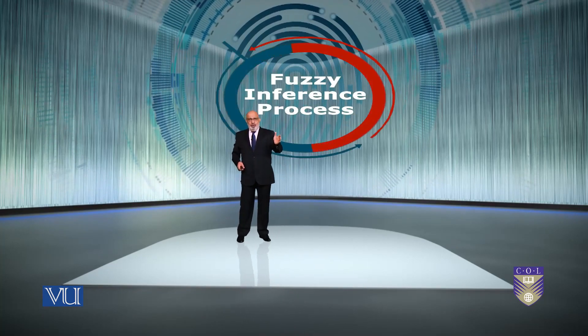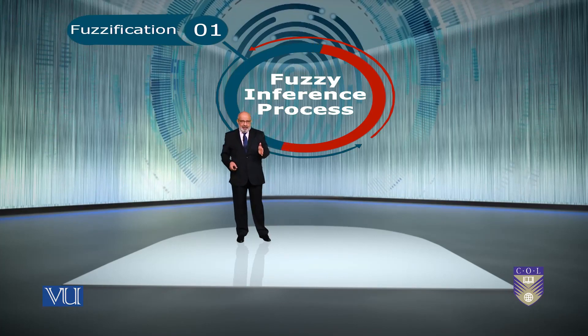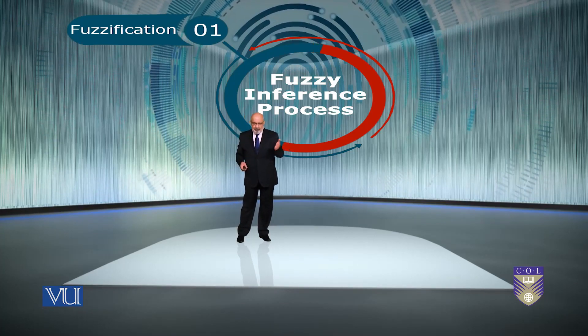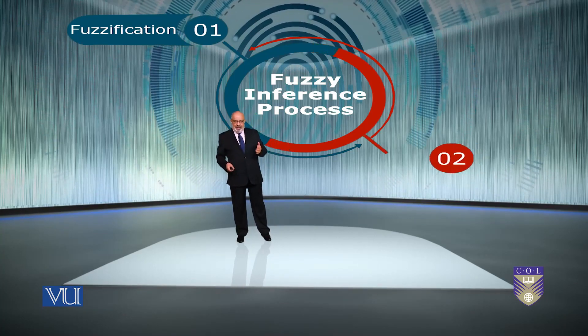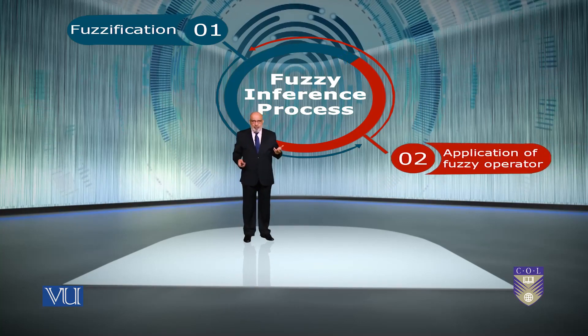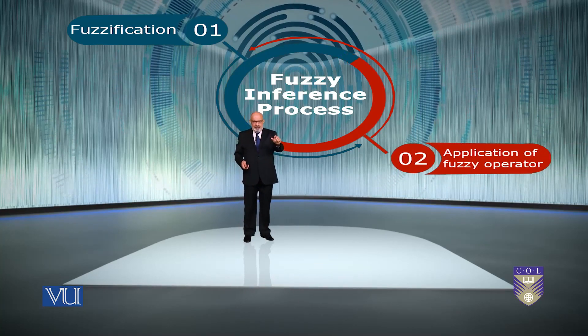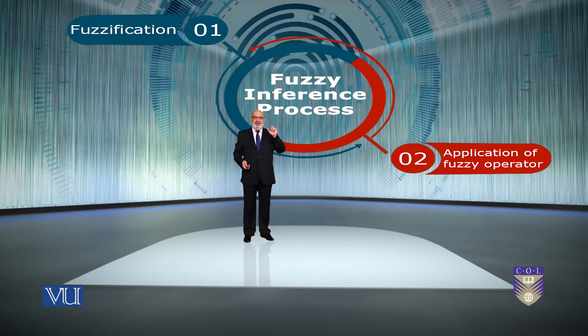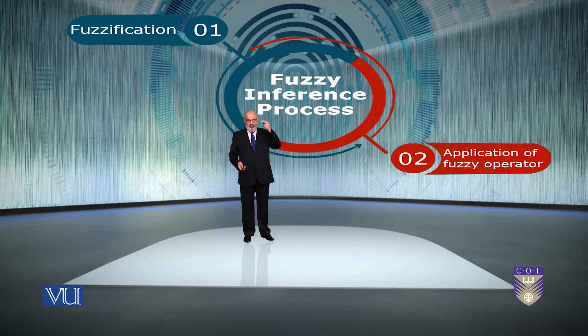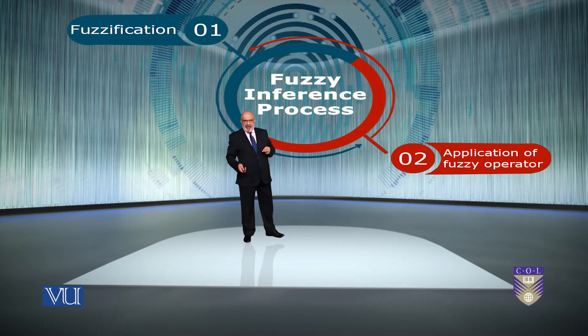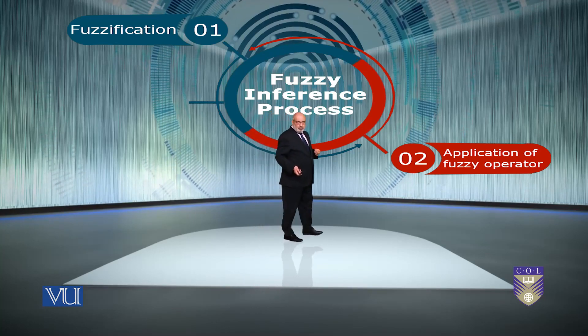You start with a crisp input and you fuzzify that. We'll see what it is. And then we apply fuzzy operator on the premise or on the antecedent or the left hand side of the rule. Fuzzify, apply the fuzzy operator.